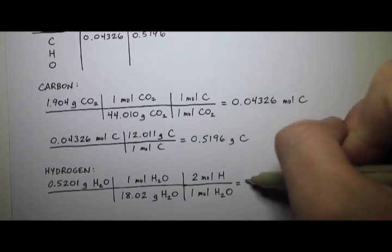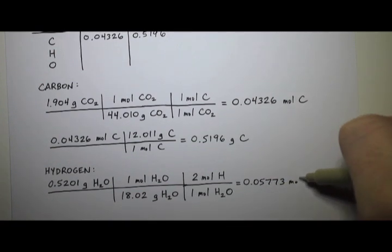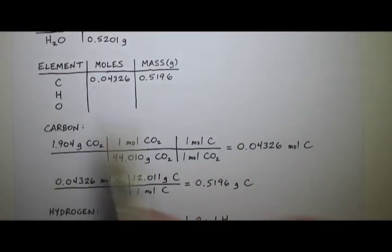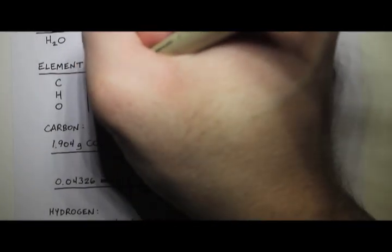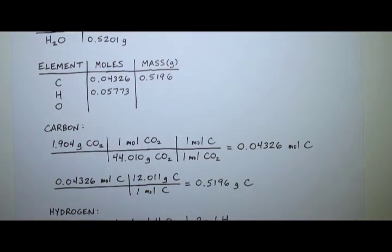So, all right, number, number, number, 0.05773 moles of hydrogen. So we can put that in our chart. Moles of hydrogen, 0.05773.